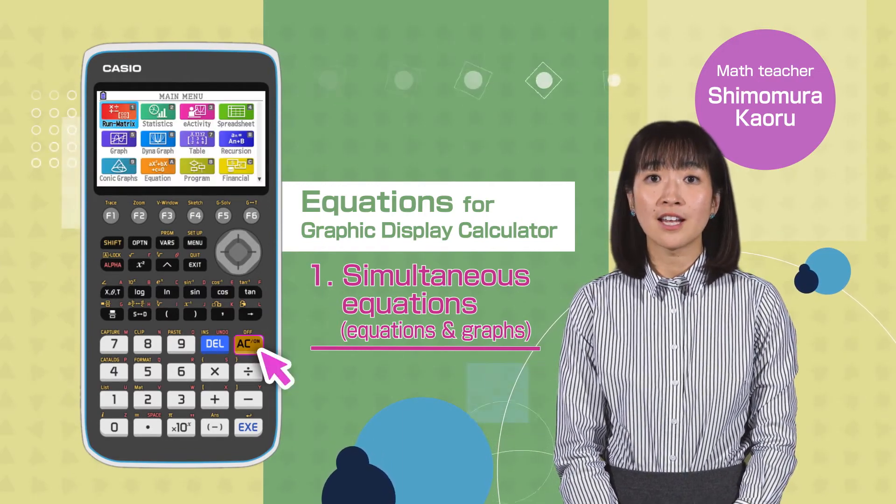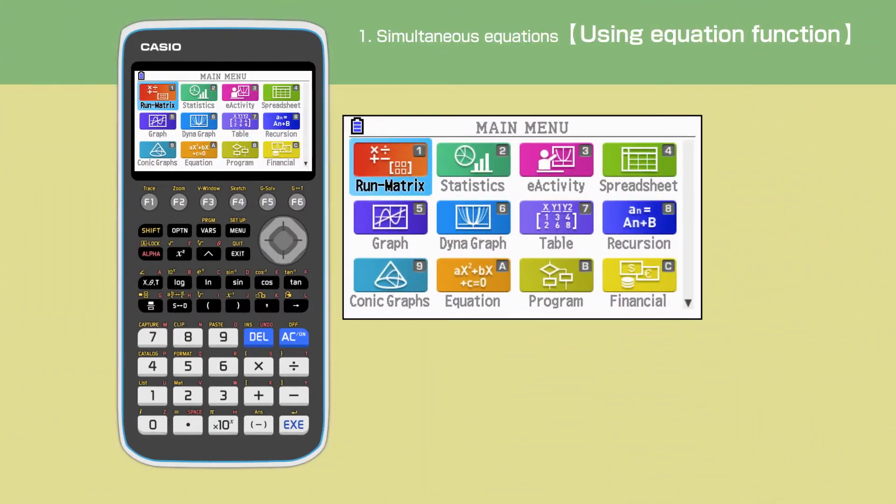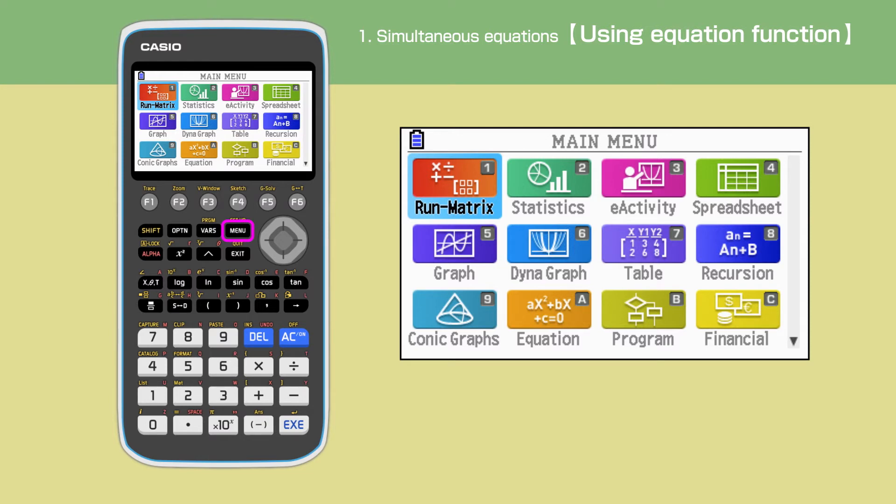Switch on your calculator, pressing AC button. Press the menu button to open the main menu, then move the cursor or press A to select the equation function.